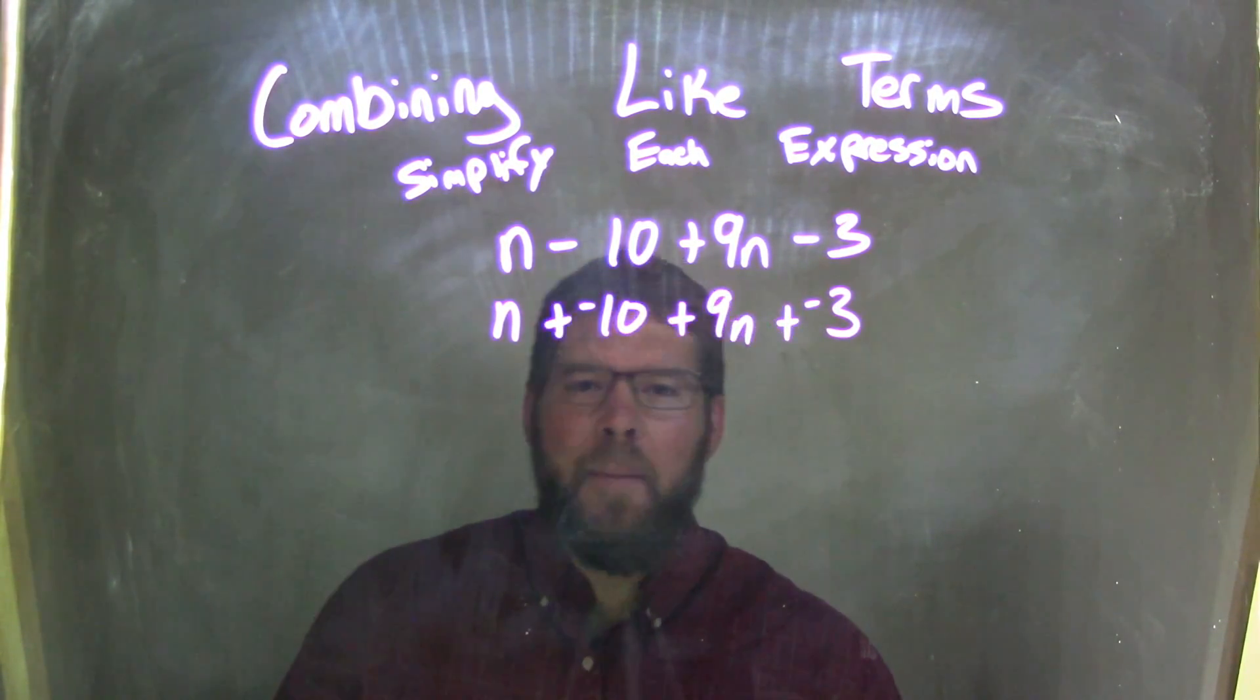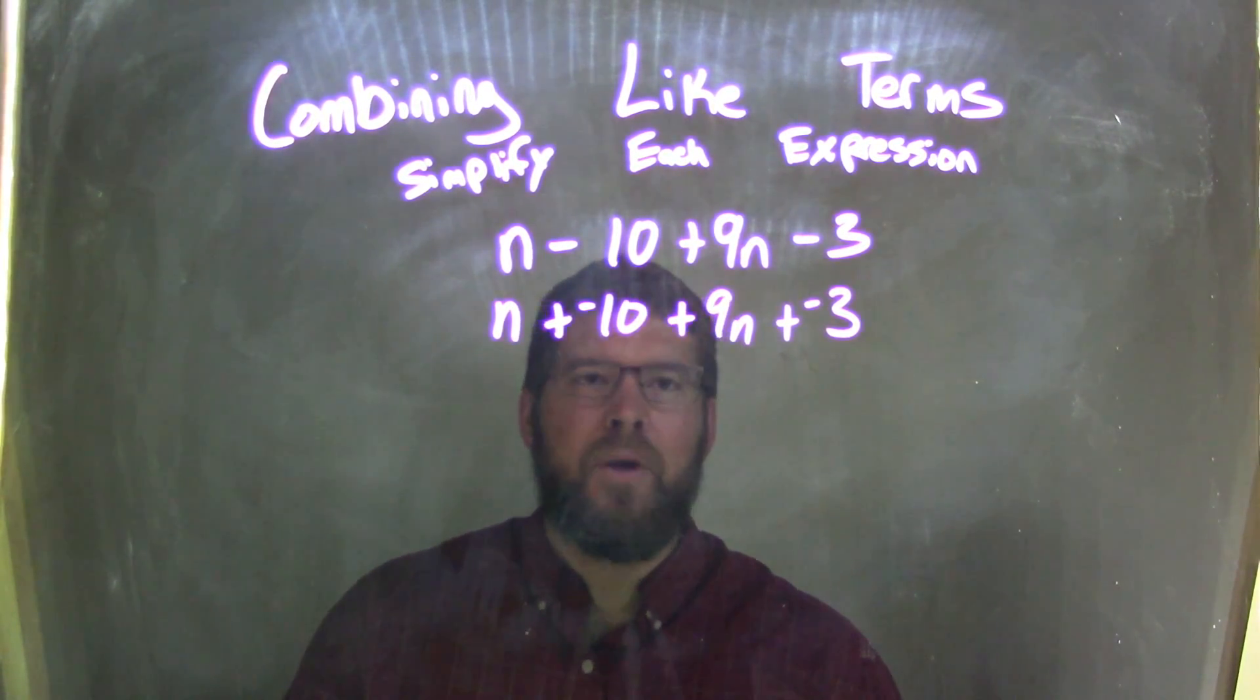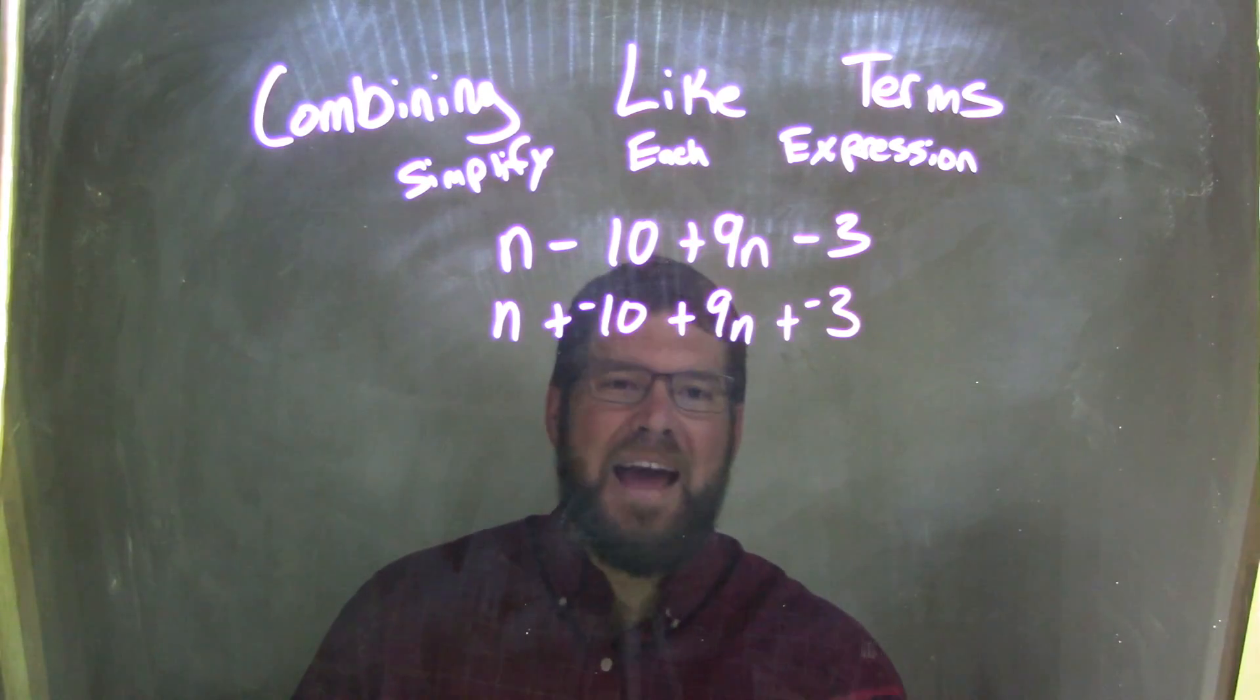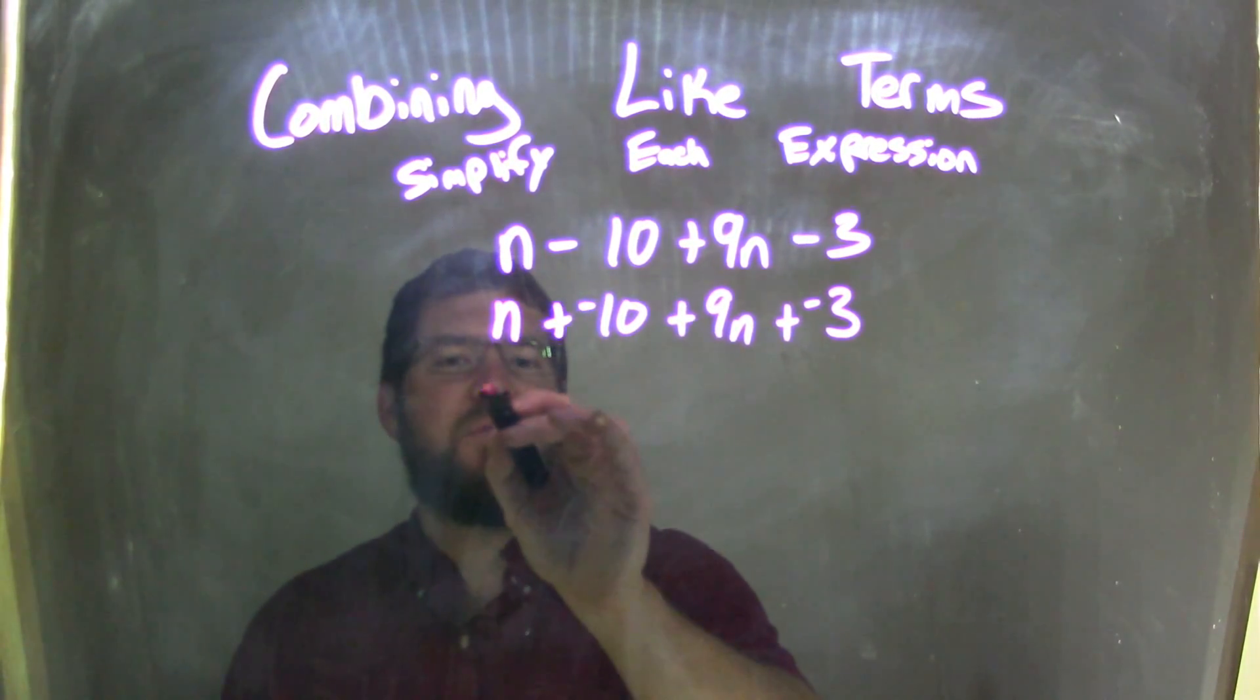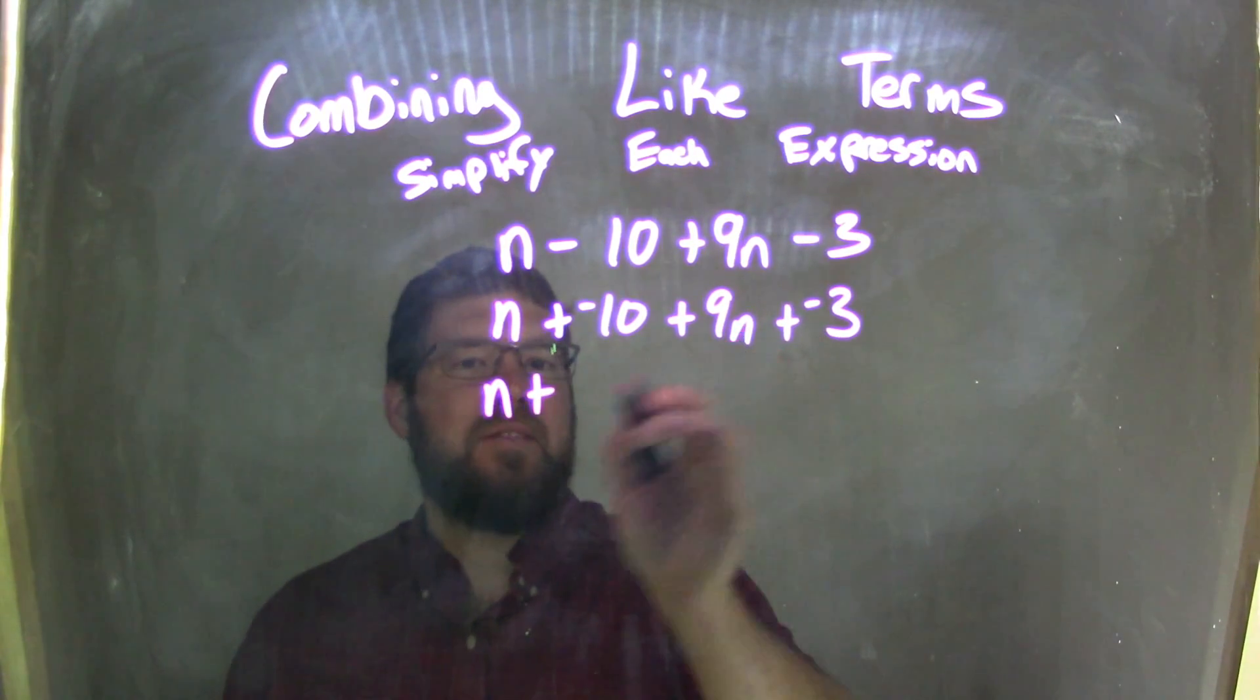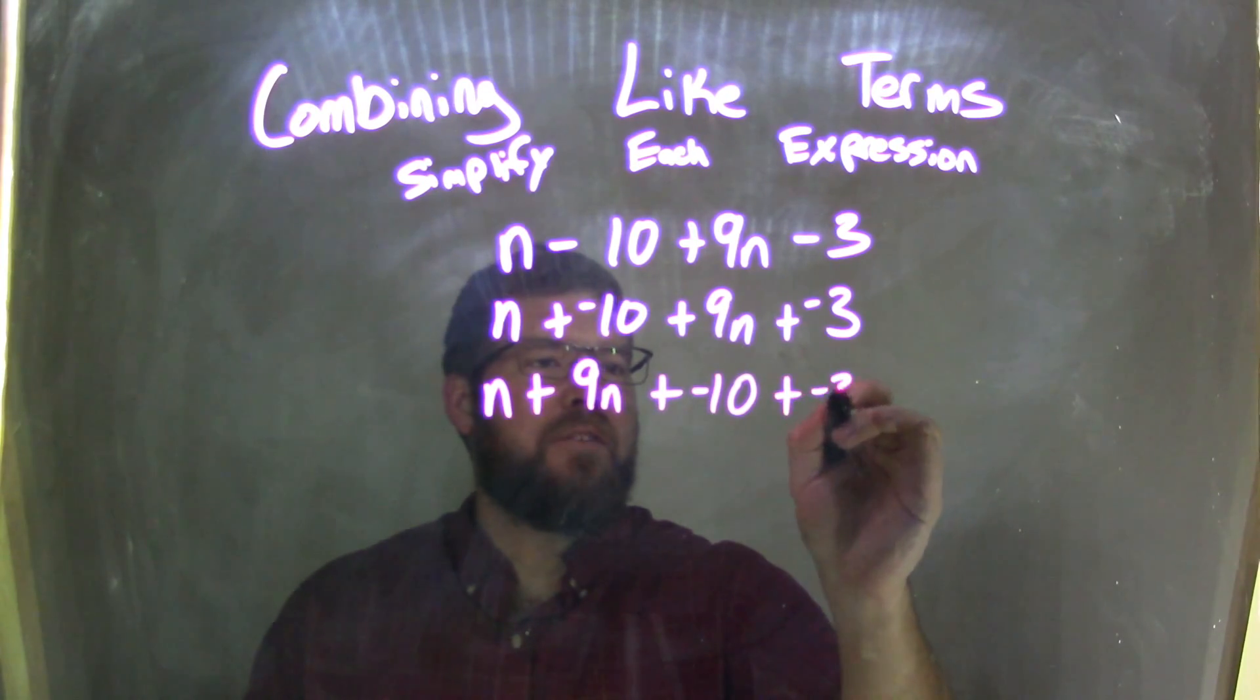And now since it's all addition, I'm not going to worry about forgetting a subtraction or some sign somewhere. So I just rearrange and put the n's next to each other and the numbers next to each other. So if I was bringing the n down here, plus this 9n, then plus a negative 10, and then plus a negative 3.